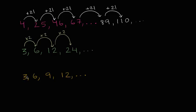All right, now let's look at this last one. So the first two terms here are the same. Three and six, the first two numbers here. So I could say, well maybe this is times two, but then to go from six to nine, I'm not multiplying by two.